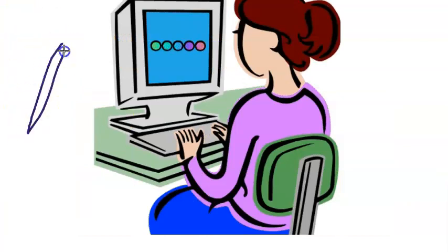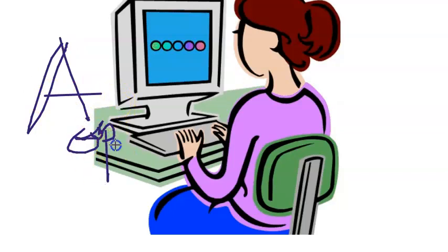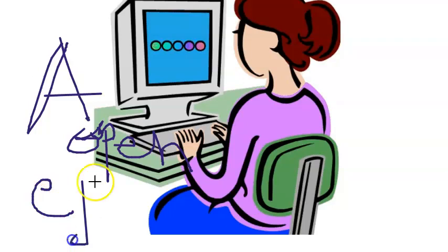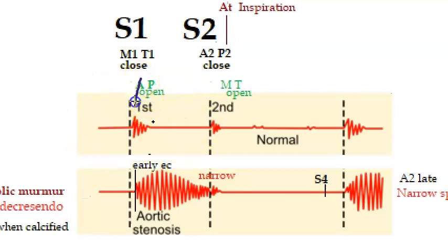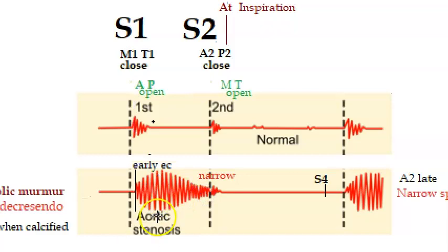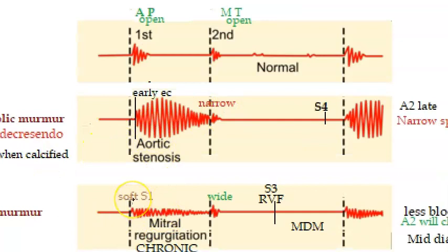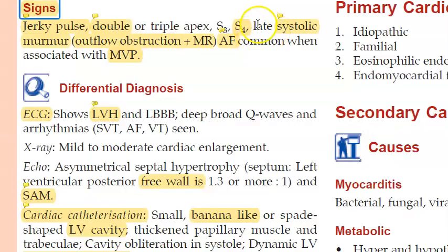The murmur occurs after the ejection click, once the aortic valve opens and blood tries to exit the narrow outflow tract. This gives an ejection systolic murmur — very similar to aortic stenosis. The textbook describes it as a late systolic murmur due to outflow obstruction.